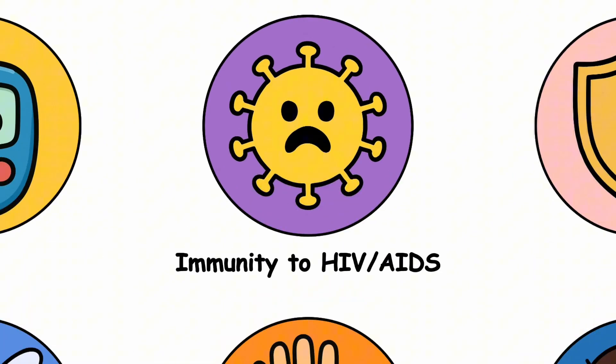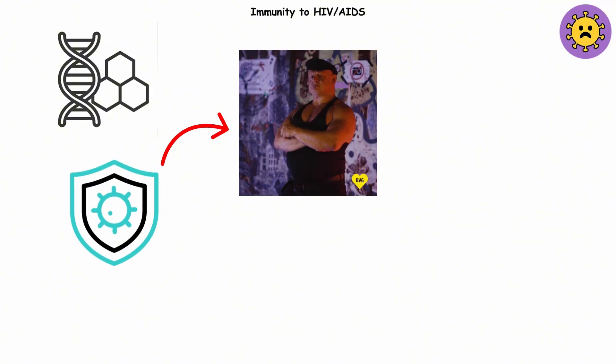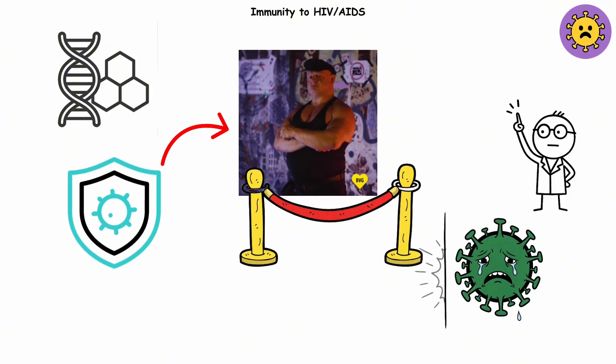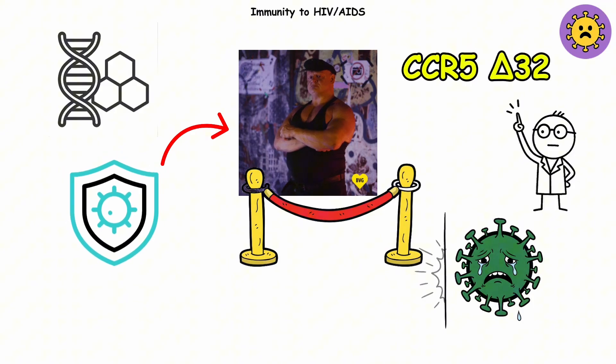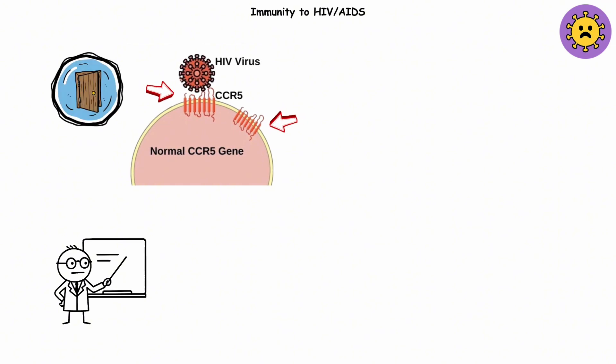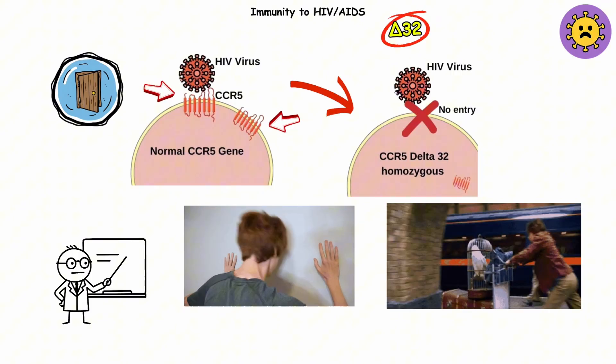Immunity to HIV-AIDS. There's a rare mutation that basically gives your immune system a VIP bouncer, one so strict, even HIV can't get past the velvet rope. It's called CCR5-Delta32. Normally, the CCR5 gene makes a protein that sits on the surface of immune cells, acting like a doorway for certain viruses, including HIV. But if you've got the Delta32 mutation, that doorway is bricked up. The virus knocks, but there's literally no door to open. It's like showing up to the train station to Hogwarts and not getting let through.